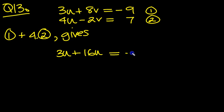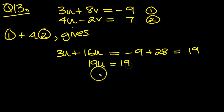One of these is minus 9, 4 of these is 28. 28 minus 9 is 19, so 3 plus 16u is 19u equals 19. So that tells us then that u equals 19 over 19, move the 19 from times to divide, so u is 1.